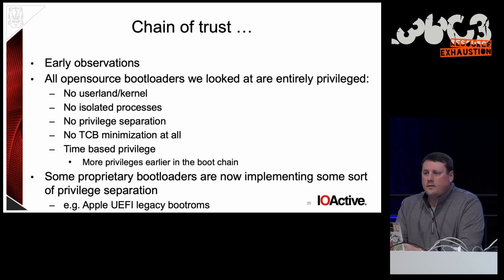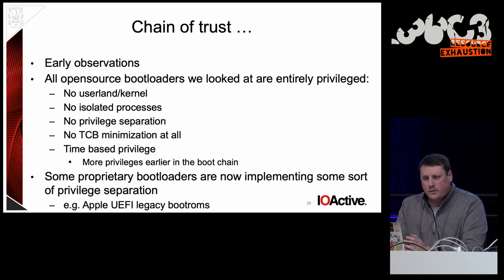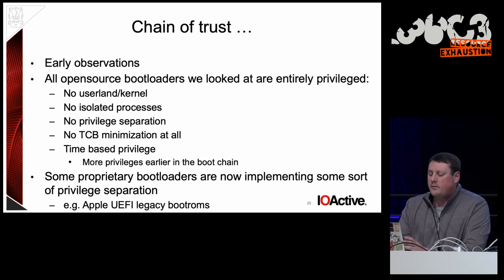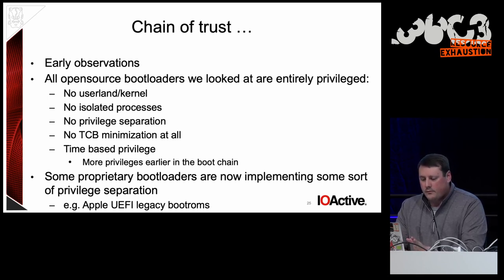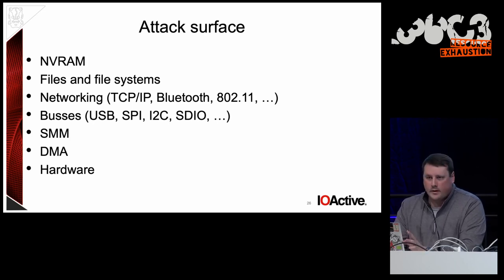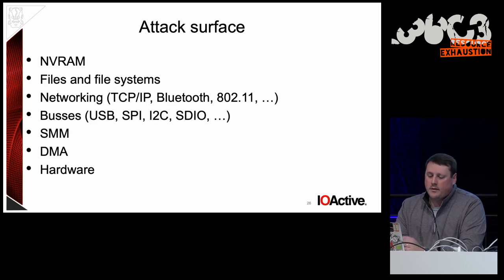Early observations: everything we looked at that's open source has no privilege separation. If you compromise a component, you pretty much rule everything. Interestingly, some proprietary bootloaders like Apple's are doing some aspect of privilege separation — if you exploit a portion, you didn't necessarily control the world. Right now all the stuff we looked at did not have anything like that, but maybe in the future we'll see it. The attack surface people should focus on includes NVRAM, file systems, network stack protocols, various buses, SMM, DMA, and hardware.